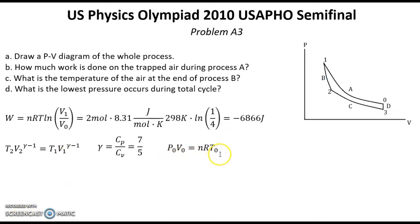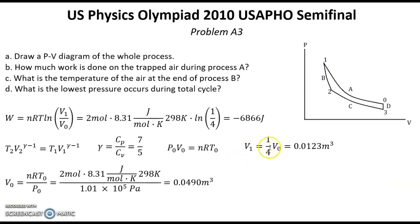From the universal gas law, we have P0V0 equals nRT0. So from here we can find V0 equals number of moles multiplied by RT0 over P0. Now we can put in all numbers, and we get V0 equal to 0.0490 cubic meters. Now we can count V1, which is 4 times less than V0, giving us 0.0123 cubic meters.